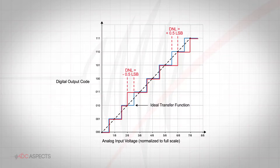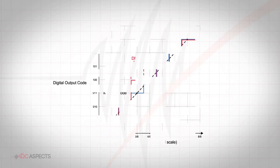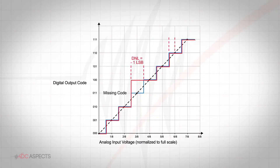It is important for the DNL error to be less than one LSB in magnitude to guarantee no missing codes. Missing codes are output digital codes that are not produced for any input voltage due to large DNL error. The figure on screen shows code 011 missing in such a case.